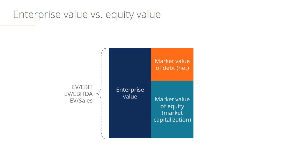On the enterprise value side of this equation, we compare the enterprise value to things like revenue or sales, EBITDA, and EBIT. Notice that these three metrics are all before interest on the income statement. That's because this does not give consideration to any debt on the balance sheet, so these items must be before interest on the income statement.